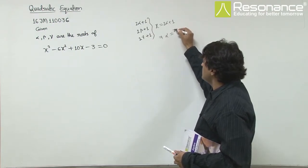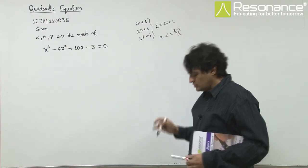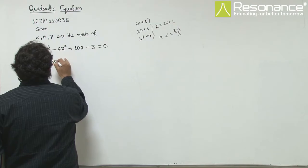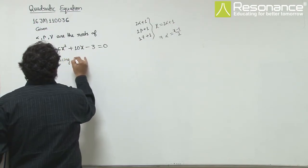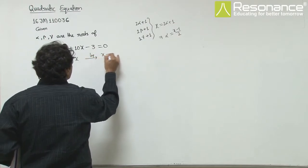That means α is (x-1)/2. Alpha should be (x-1)/2. So if I will replace x with (x-1)/2.